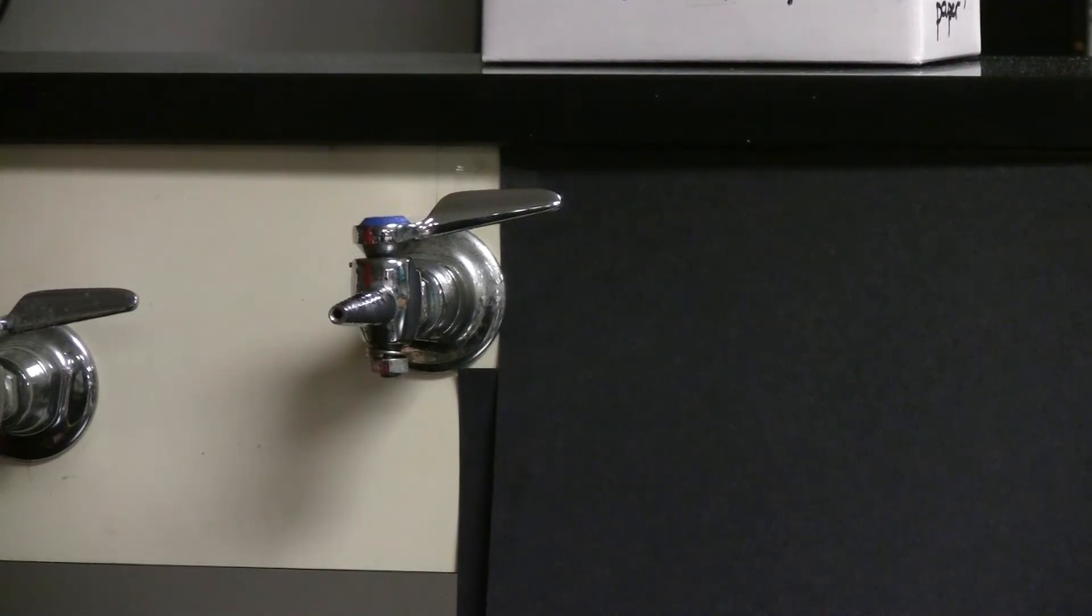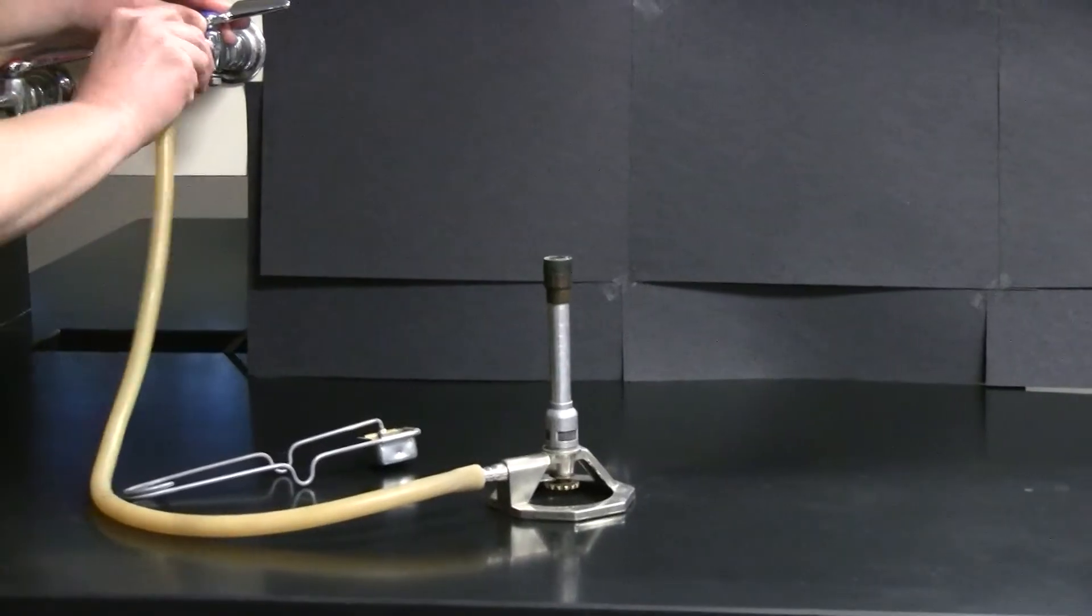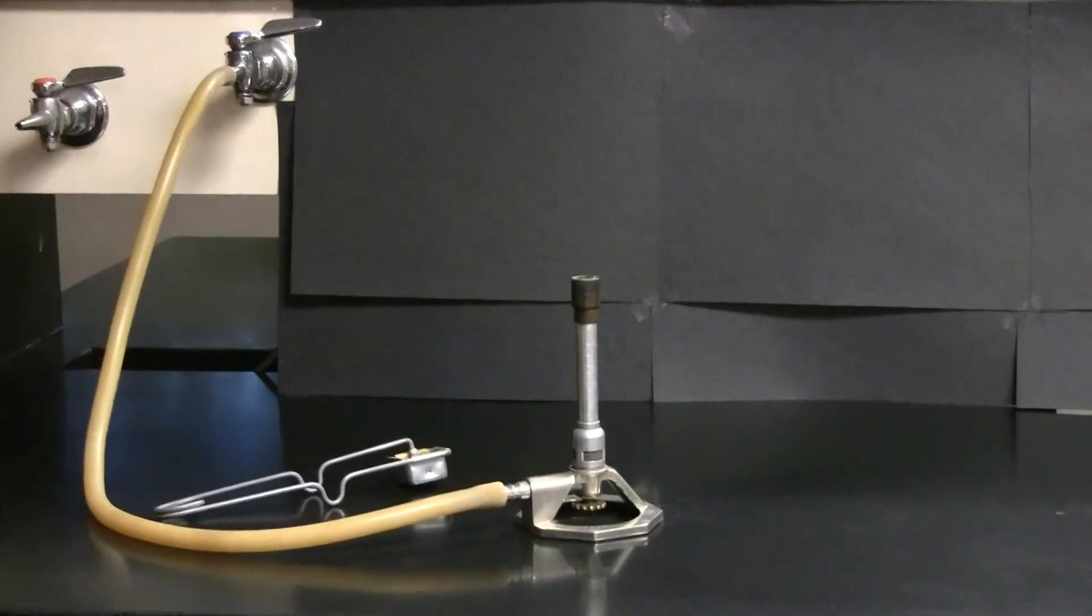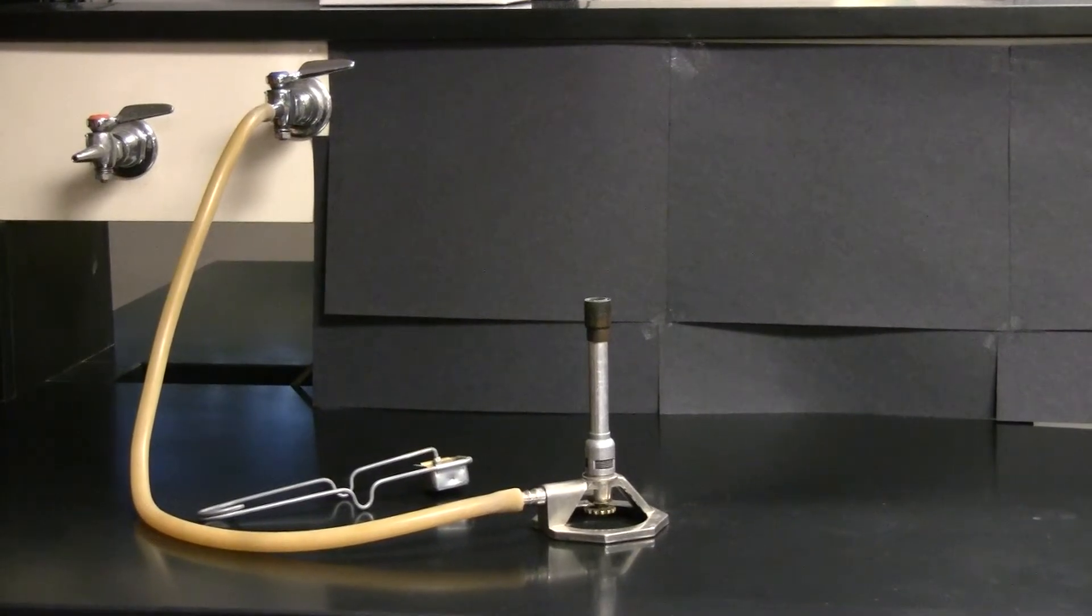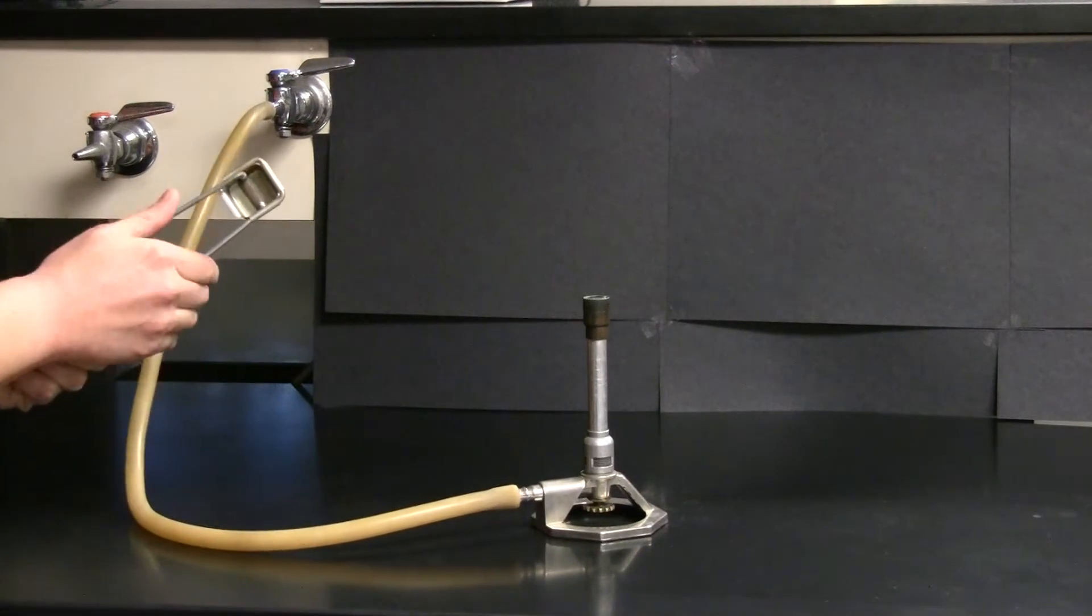Now let's get ready to light the Bunsen burner. Attach the hose from the Bunsen burner to the gas inlet valve and nozzle on the bench top. Make sure that the hose is on securely. Practice a few times with your striker again just to make sure that you're going to get good sparks.